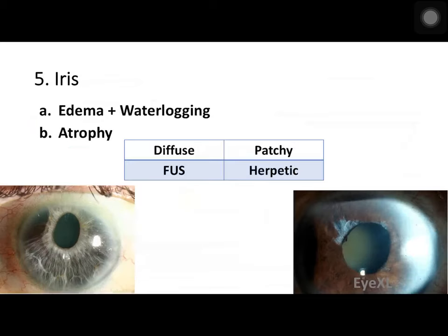Next, examine the iris. The first thing to examine is the presence of edema and waterlogging. To differentiate an edematous from a non-edematous iris, compare it with the other eye. Since uveitis is usually unilateral, you can appreciate whether the iris appears thick, boggy, or swollen when compared to the normal eye.